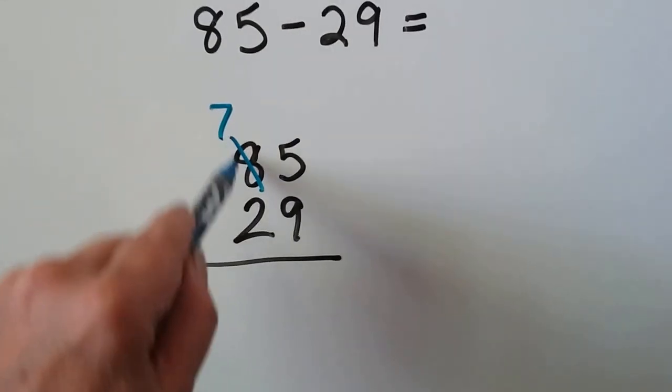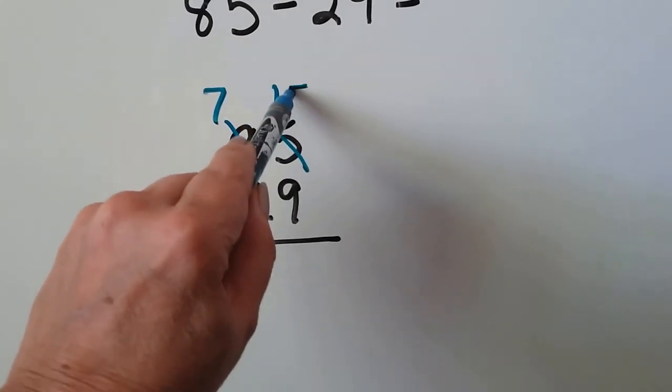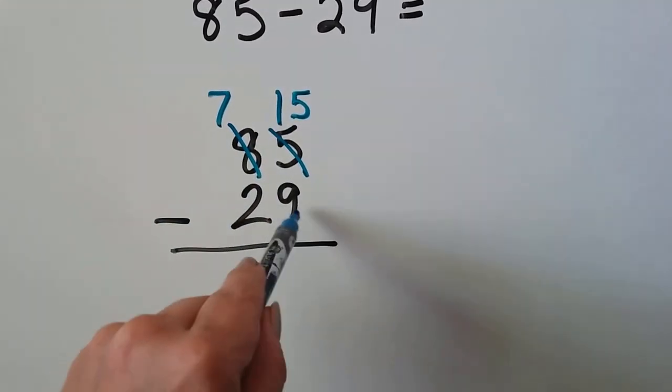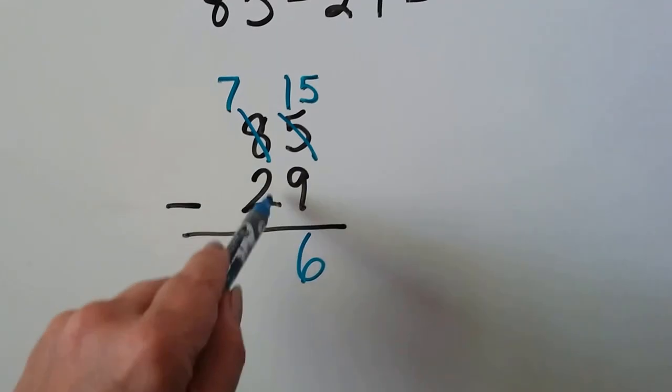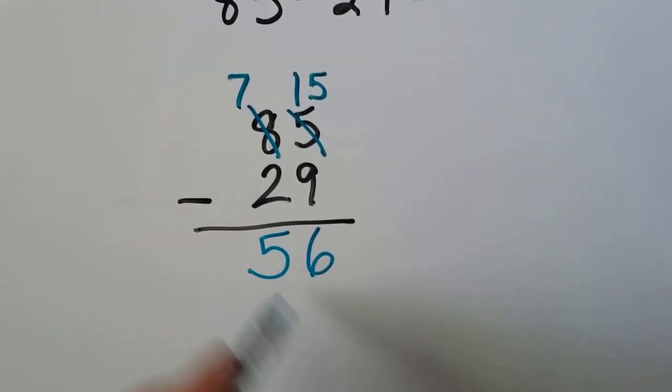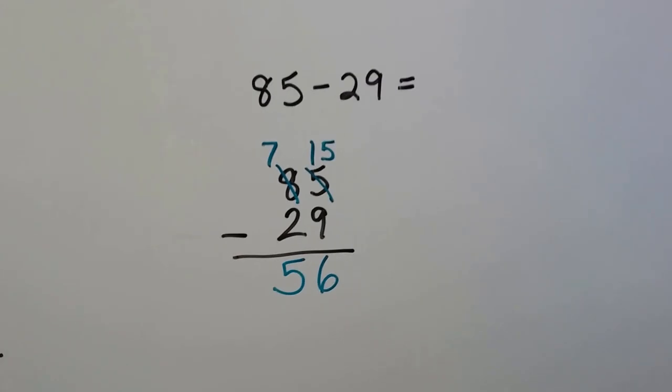The 8 becomes a 7. We give the 10 to the ones place, so the 5 becomes a 15. 15 minus this 9 is a 6. And 7 minus 2 is 5.